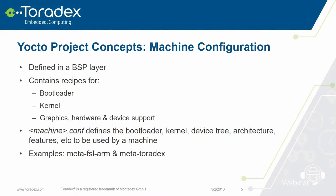Machine configuration is defined in BSP layers. A BSP layer provides recipes for the bootloader, kernel, and low-level hardware support. It may also append to recipes in other BSP layers. The BSP layer contains machine configuration files which define the recipes to be used for the bootloader, kernel, etc., and the preferred provider of those recipes. It also defines the architecture that packages should be compiled for and the device tree and features to be used by the machine. Examples of BSP layers are Meta FSL ARM and Meta Toradex.